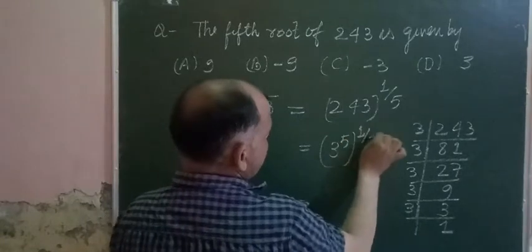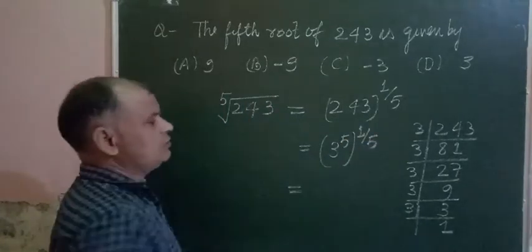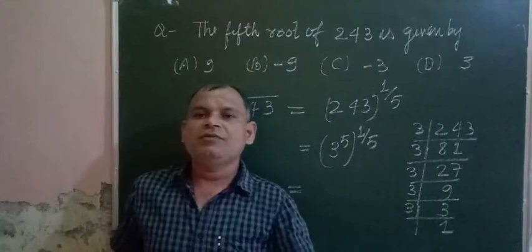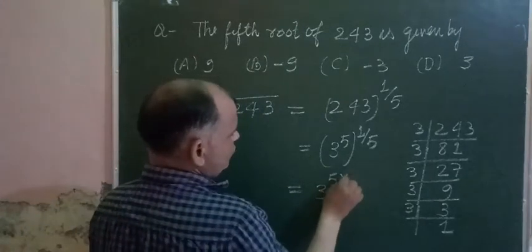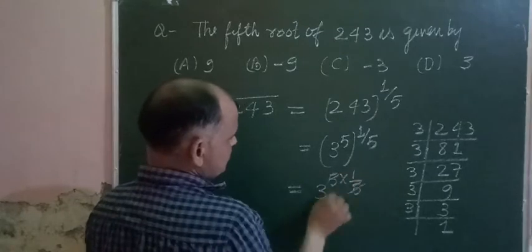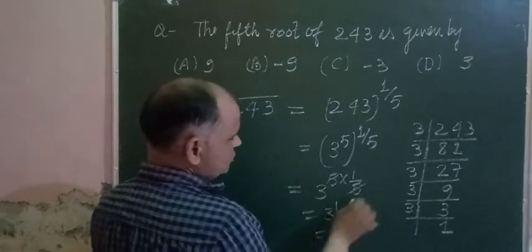This becomes 3 to the power 5, all to the power 1 upon 5. You know that with power to power, the powers are multiplied, so 5 times 1 upon 5 equals 1. This gives us 3 to the power 1, which is 3.